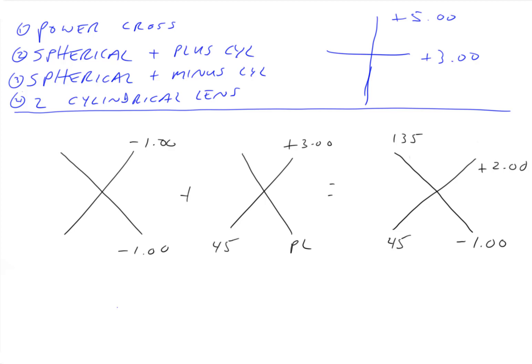So this is 45 degrees, this is 135 degrees. Our spherical lens is minus one sphere. And our cylindrical lens has a power of plus three, and the axis is 135. So the way we describe this toric system is: minus one, plus three, axis 135. That is how we solve for a toric system using a spherical lens and a plus cylinder lens. The next presentation is going to use a spherical lens and a minus cylindrical lens.